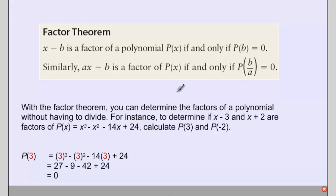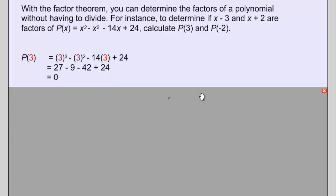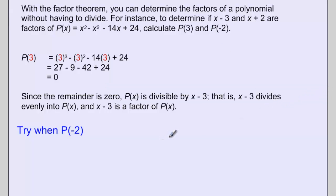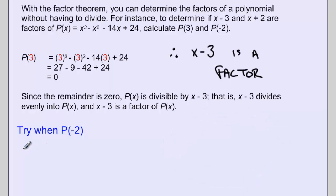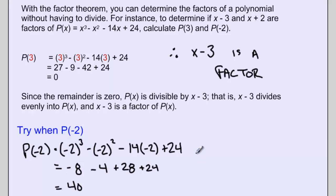As an example, using the factor theorem we can determine the factors of a polynomial without doing long division. For example, we can determine if x minus 3 and x plus 2 are factors of the polynomial p of x by calculating p evaluated at 3 and p evaluated at negative 2. When I evaluate p of 3 and work through the math, I get a remainder of 0, which tells me that x minus 3 is a factor. When I evaluate p of negative 2 I get an answer of 40, which means that x plus 2 is not a factor.